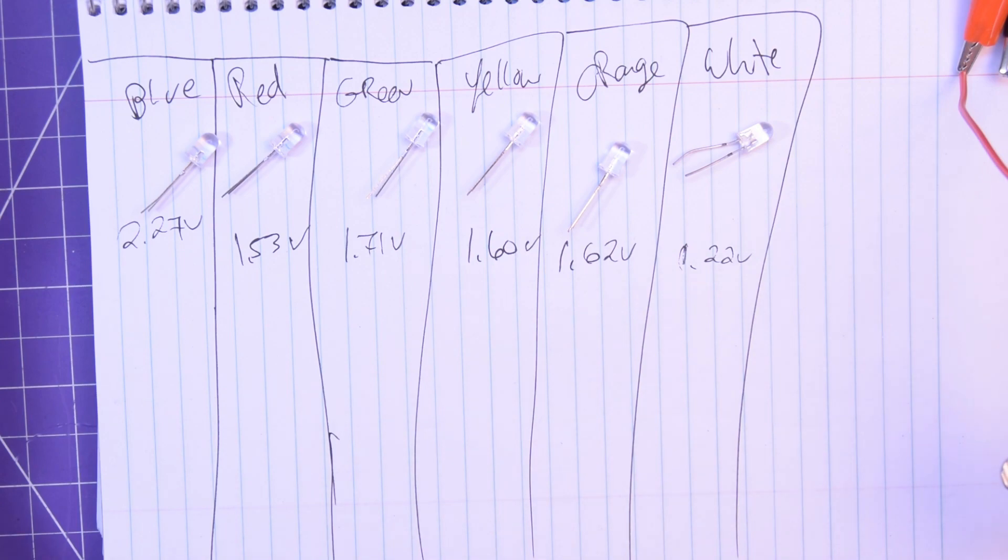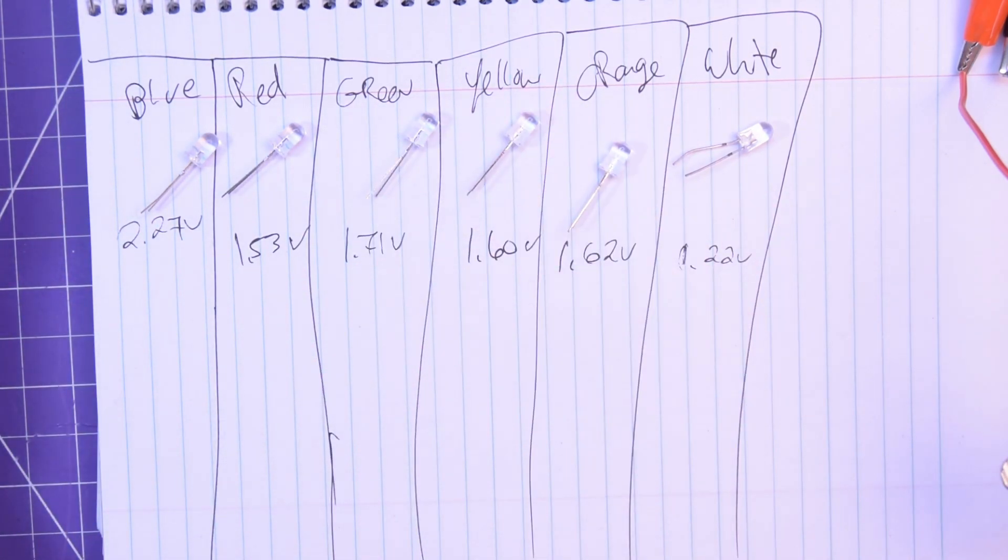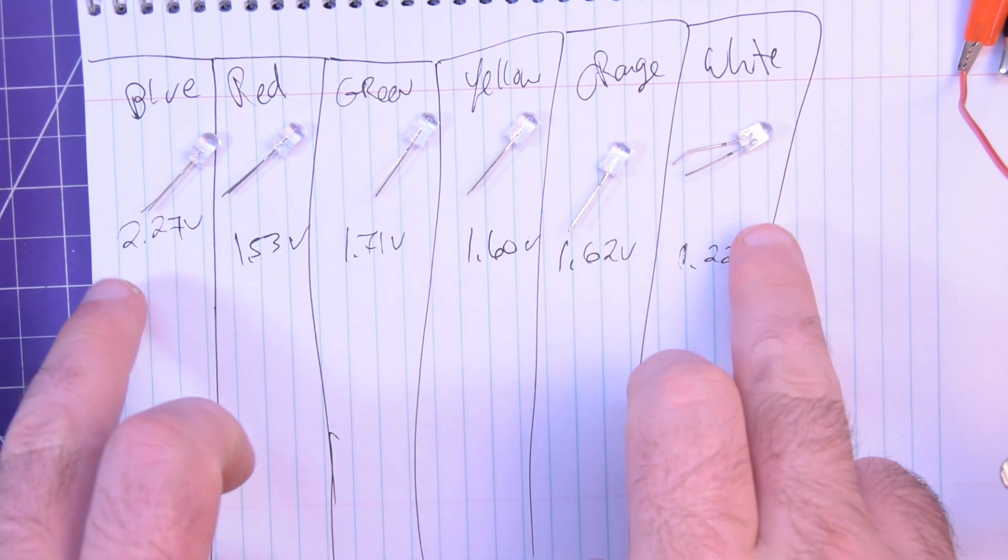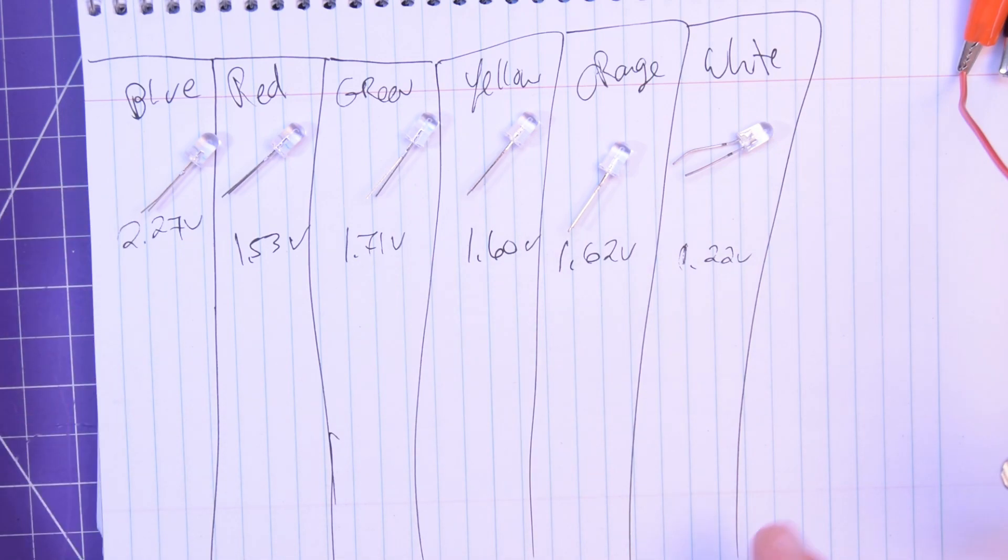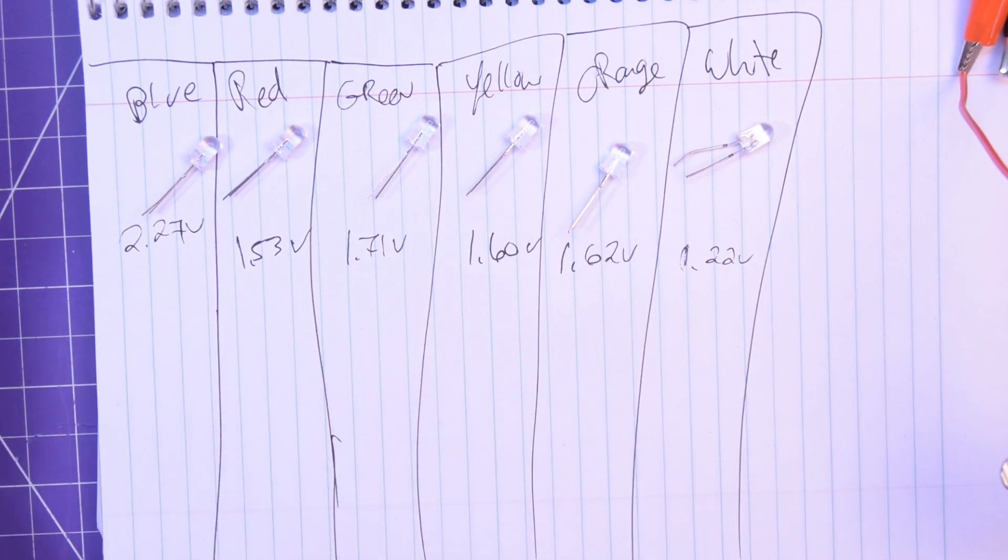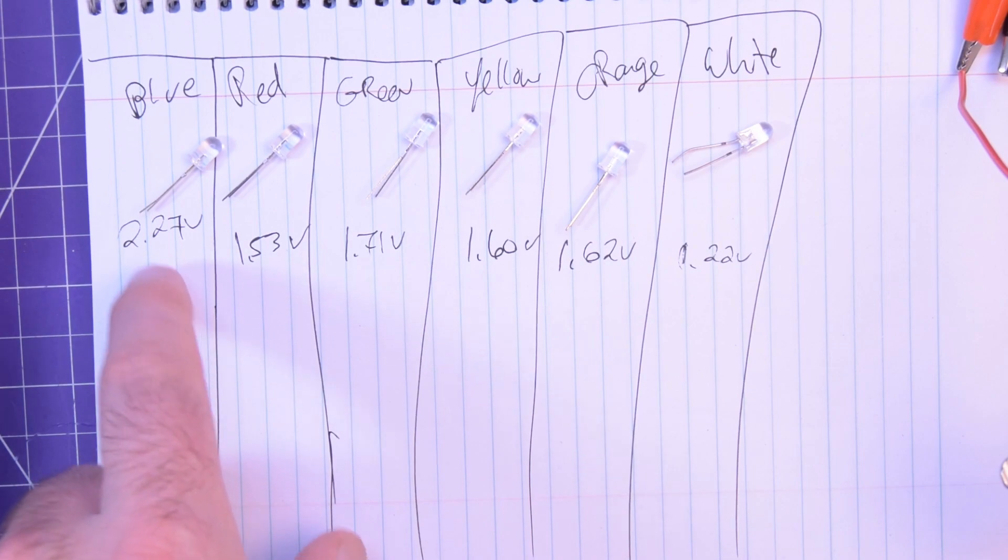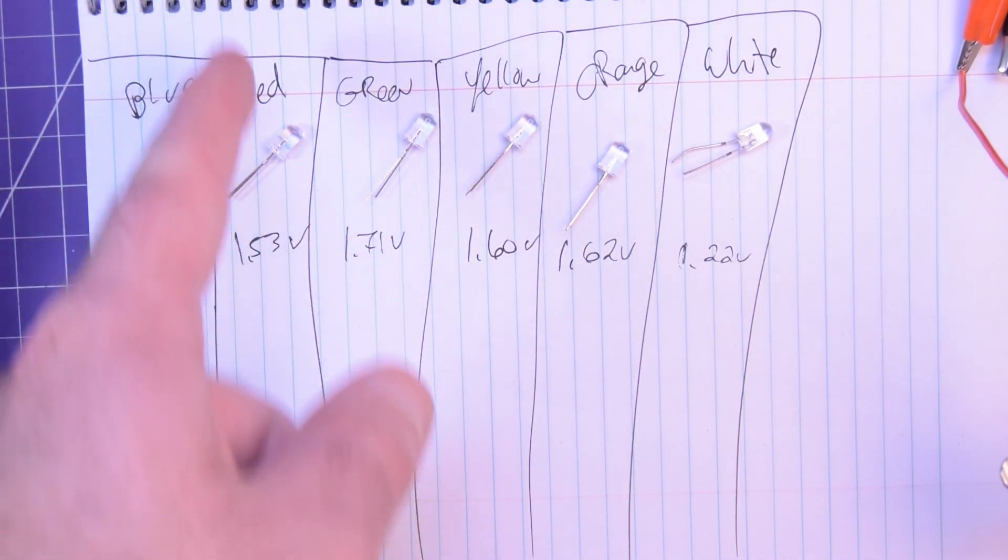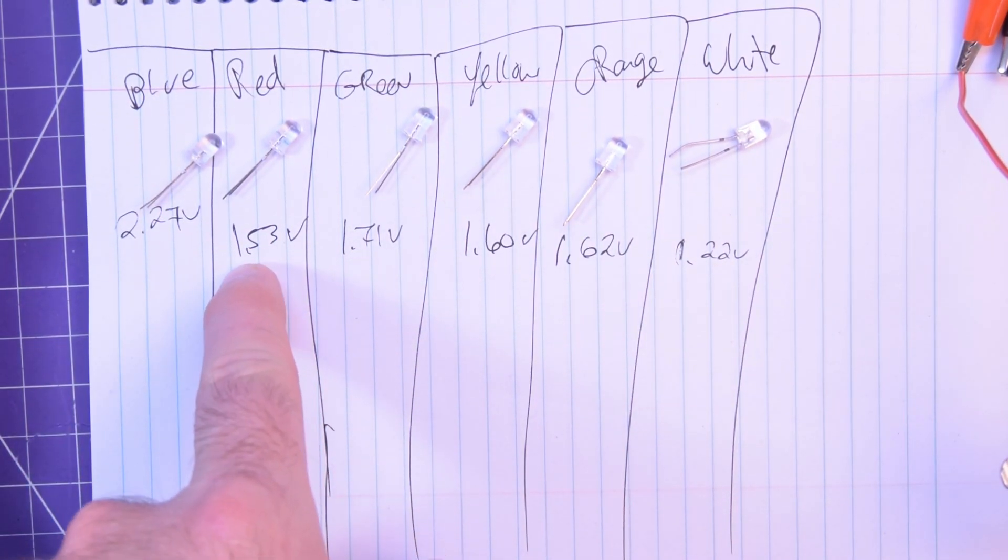Super interesting findings. So, in case you didn't know. A white LED is actually a blue LED with a layer of phosphor on top of it. And so, the white and the blue should have the highest forward voltage. They need the most voltage to turn on. And the blue gave us the highest voltage. 2.27 volts. That is ridiculous. That is well into the logic high level of an Arduino. That is really cool. The red having the lowest forward voltage gave us the lowest voltage produced as well.